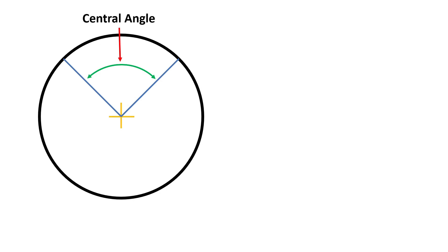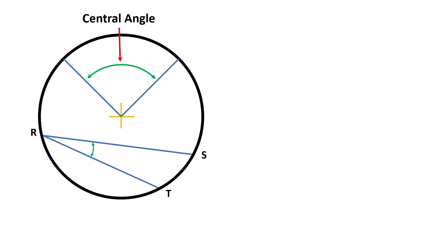An inscribed angle is an angle in a circle whose vertex is on the circle and whose sides are chords. This is chord RS. The vertex angle is not found at the center of the circle but on the circle itself. Angle SRT is an inscribed angle.